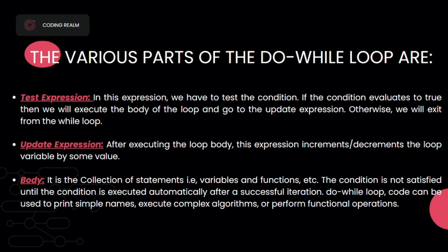The various parts of the do-while loop are: test expression — if the condition evaluates to true, we execute the body of the loop and go to the update expression; otherwise we exit the loop. Update expression — after executing the loop body, this expression increments or decrements the loop variable by some value. The body is the collection of statements — variables and functions. The do-while loop code can be used to print simple names, execute complex algorithms, or perform functional operations.